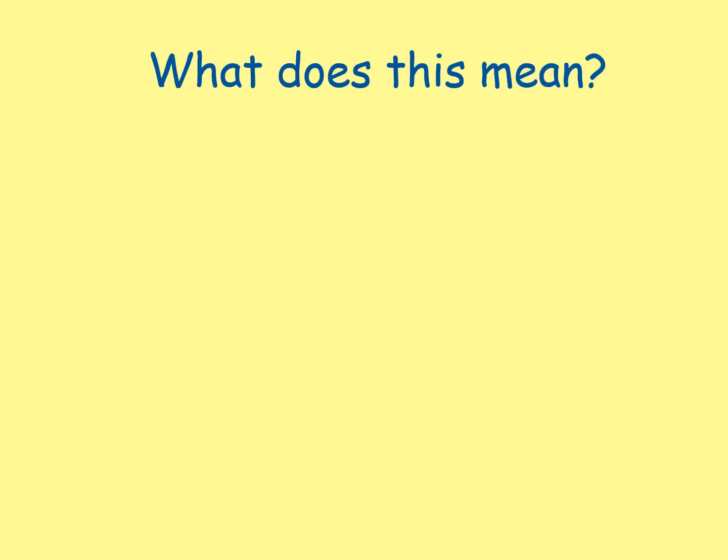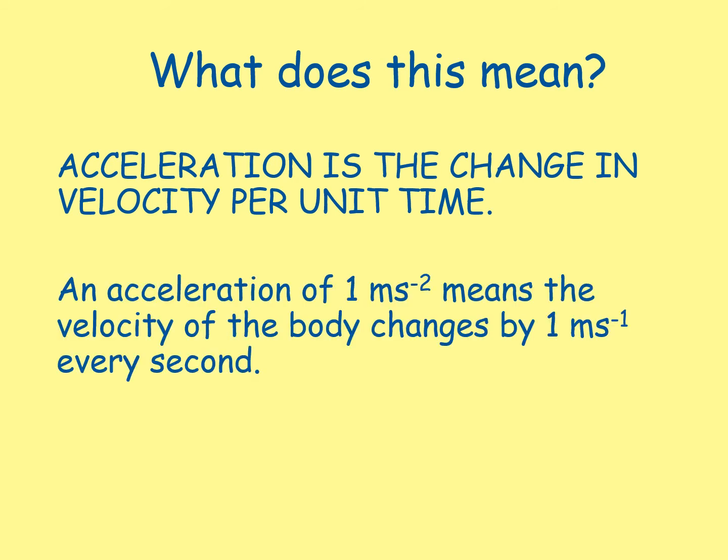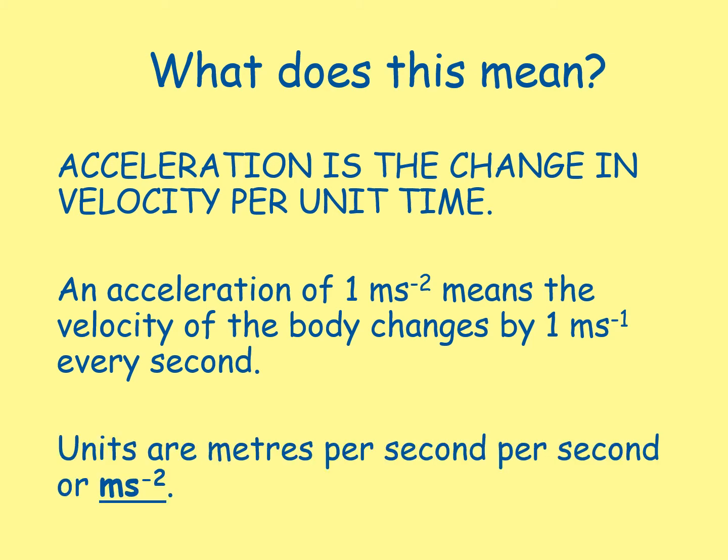Acceleration is the change in velocity per unit time. An acceleration of 1 metre per second squared means the velocity of the body changes by 1 metre per second every single second. Units are metres per second per second, or metres per second squared.